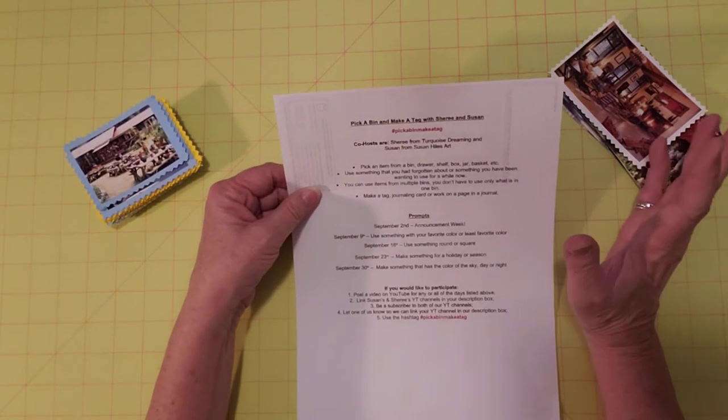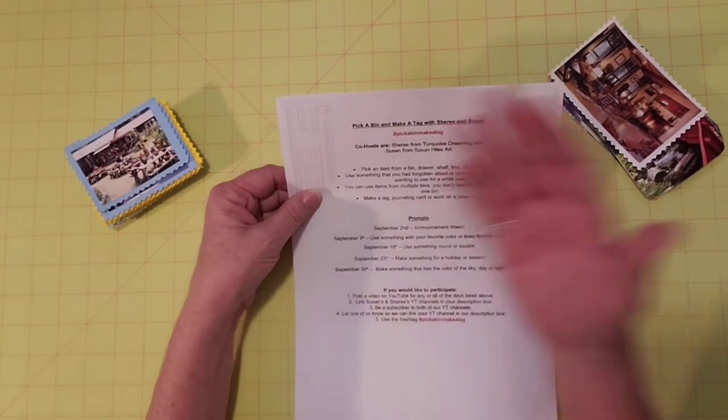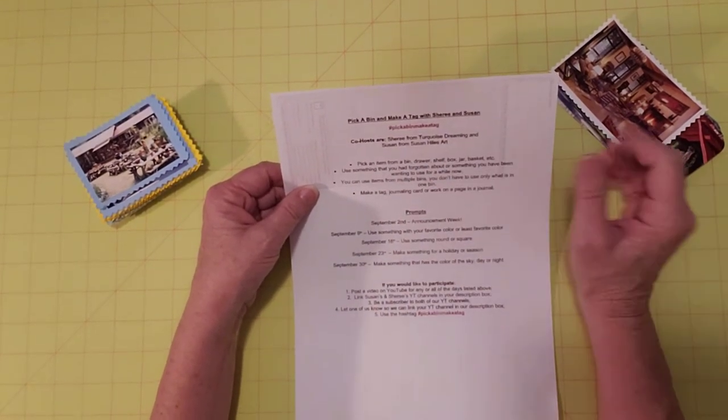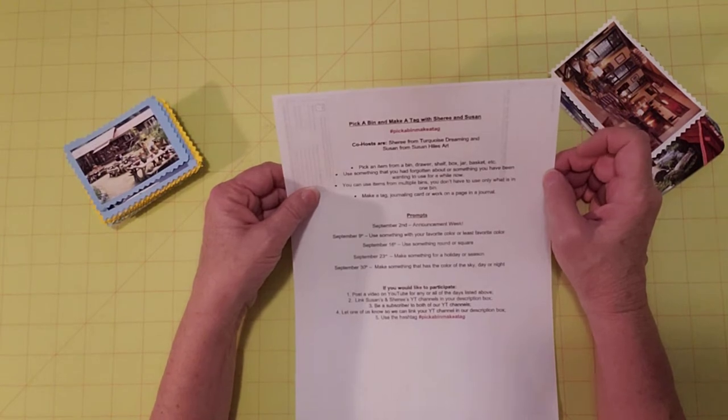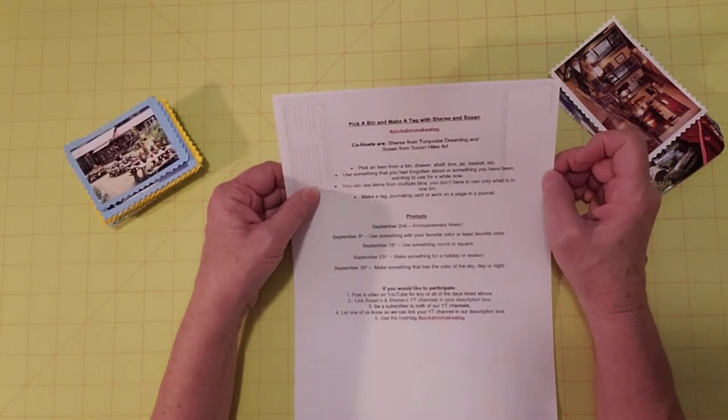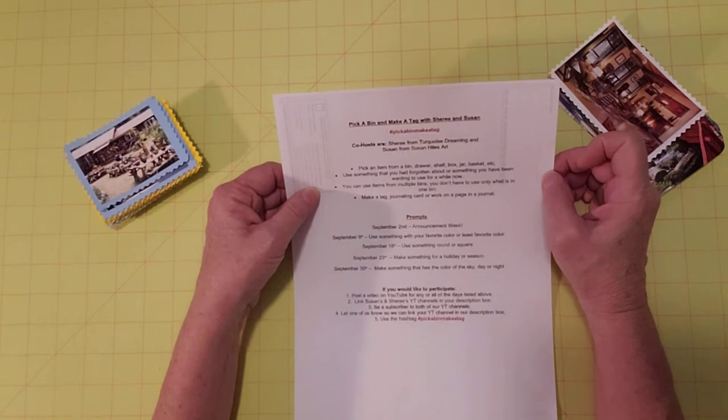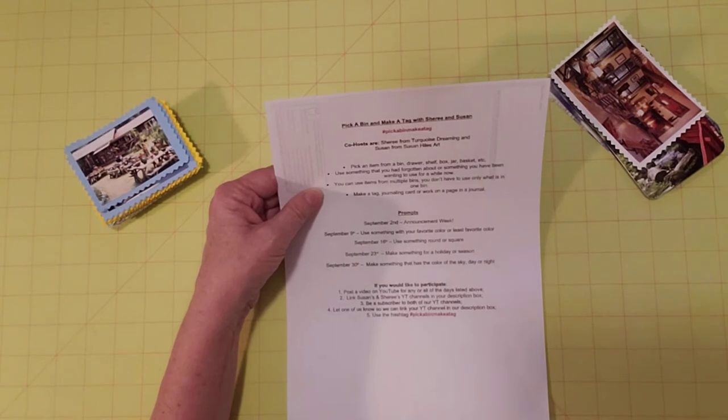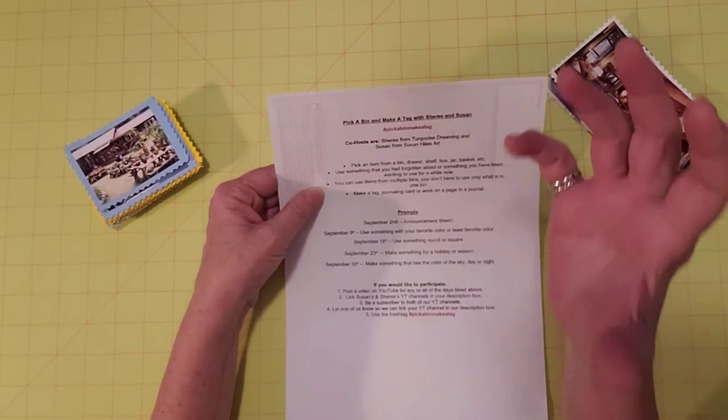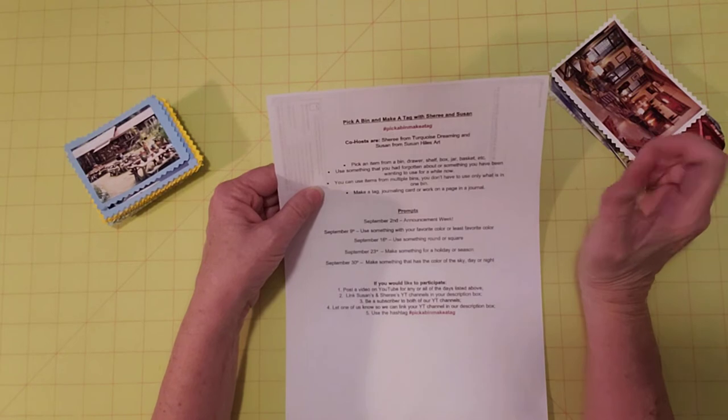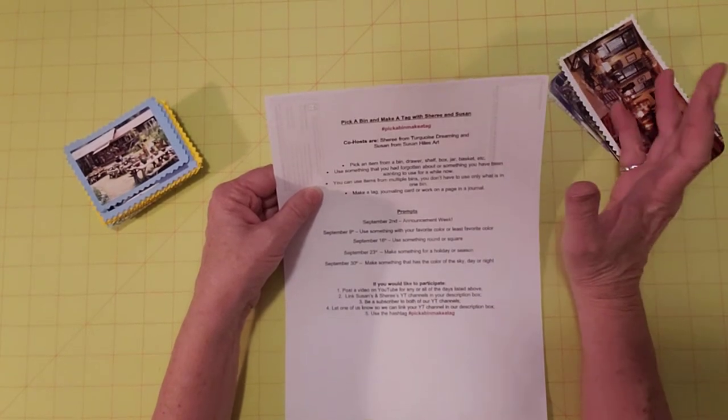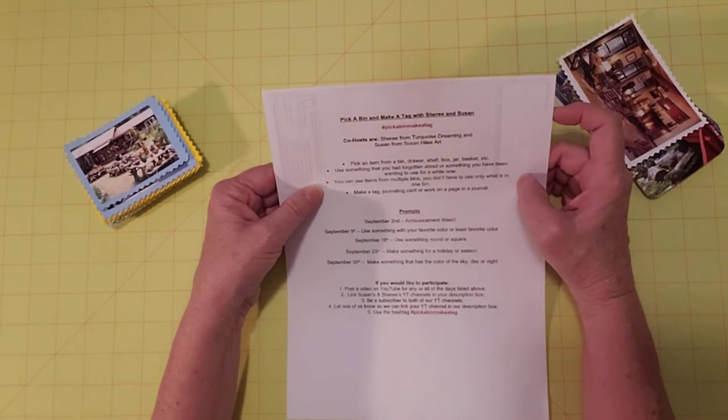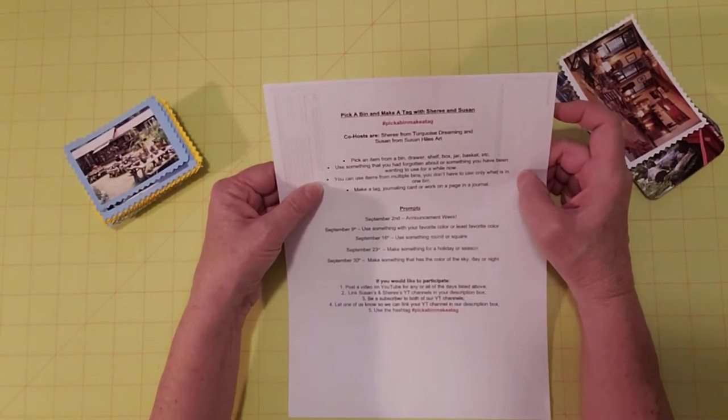The idea is to pick something from your craft room. Susan typed this out for us - pick an item from a bin, drawer, shelf, box, jar, basket. Use something that you had forgotten about or something you have been wanting to use for a while now. Maybe there's something like, oh, I want to do something with this and I have an idea, I just haven't sat down and done it. Now maybe this will be your motivating factor.